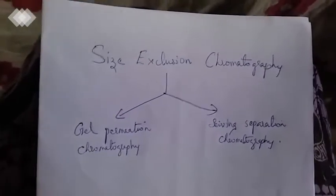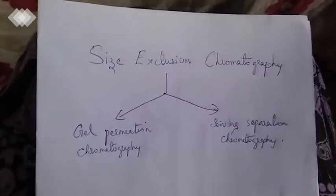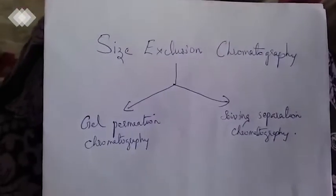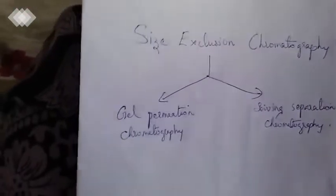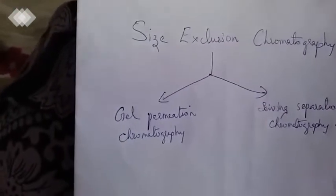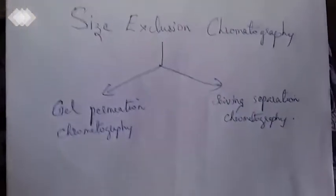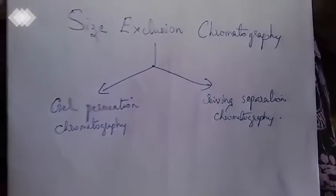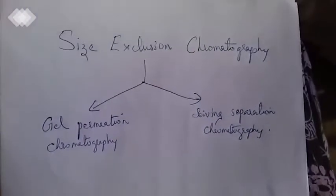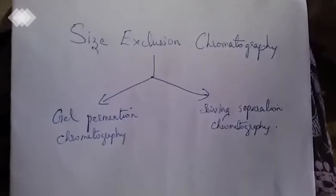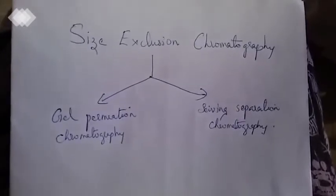In gel permeation chromatography, we have a gel in the stationary phase. We have a polymer or 3-dimensional network of molecules.